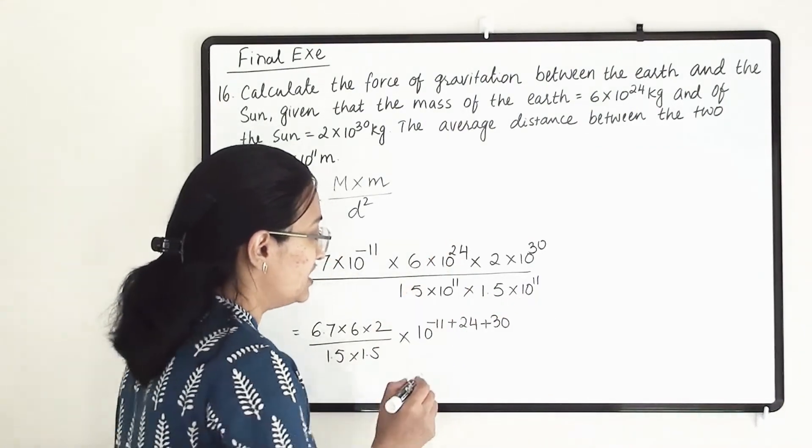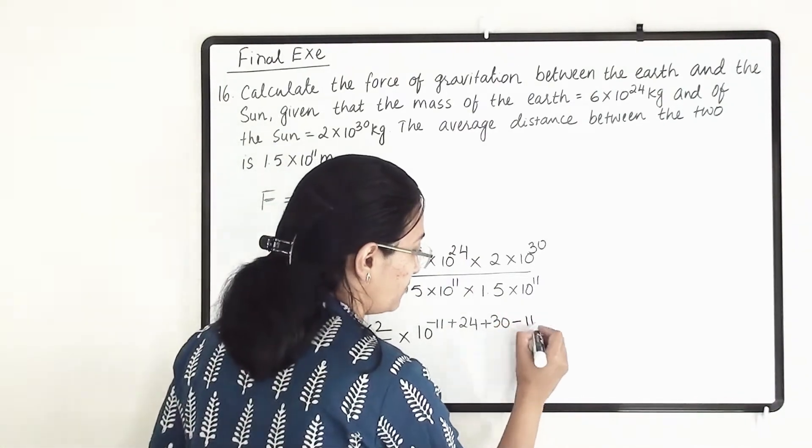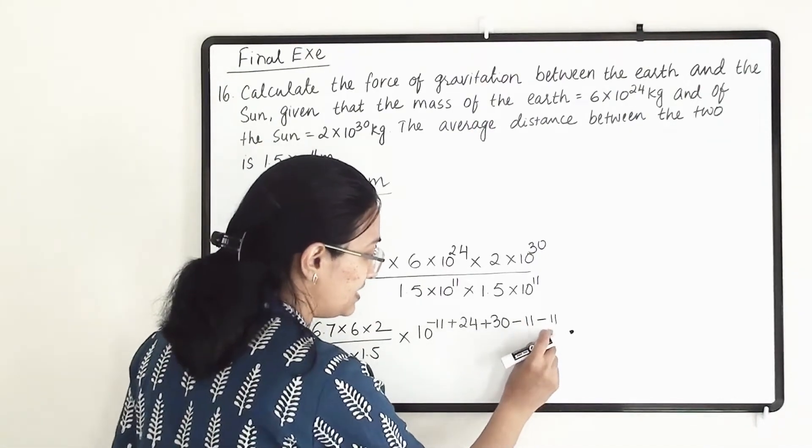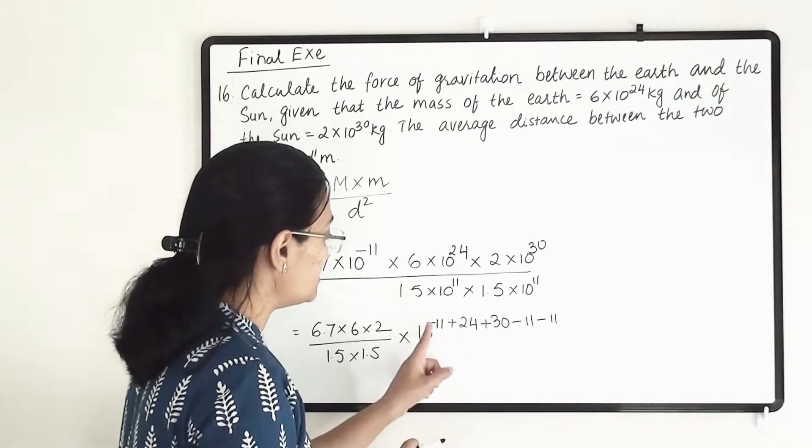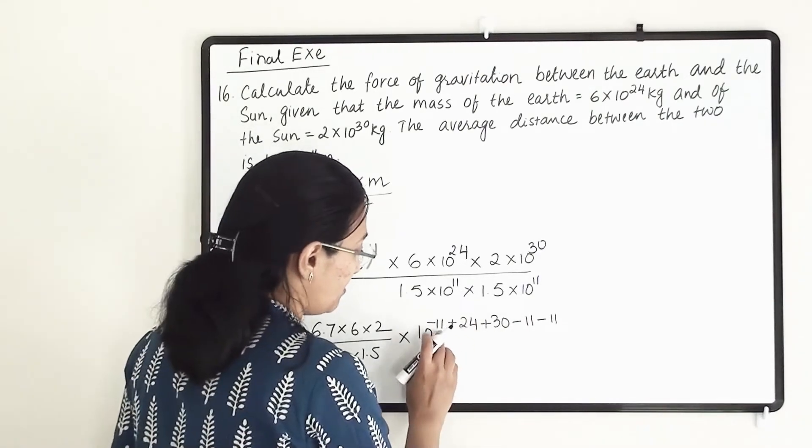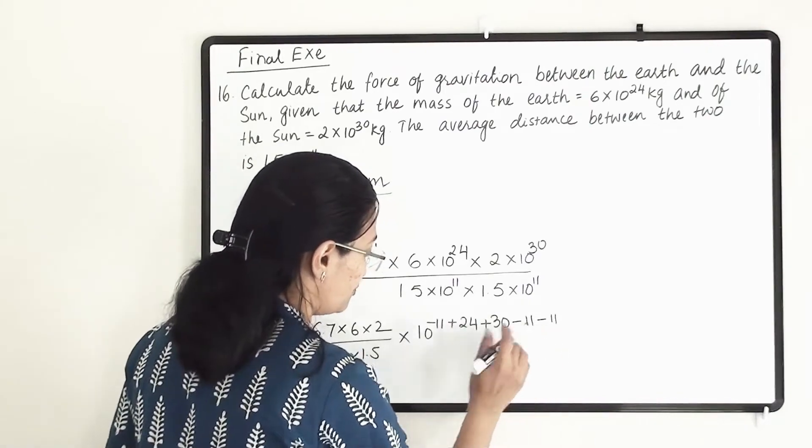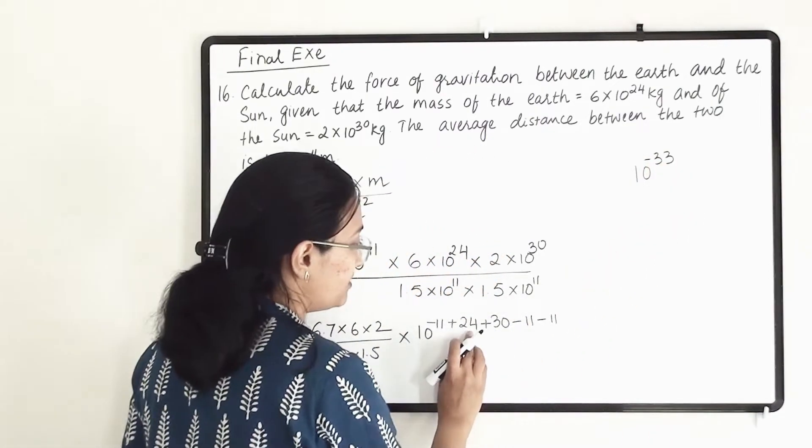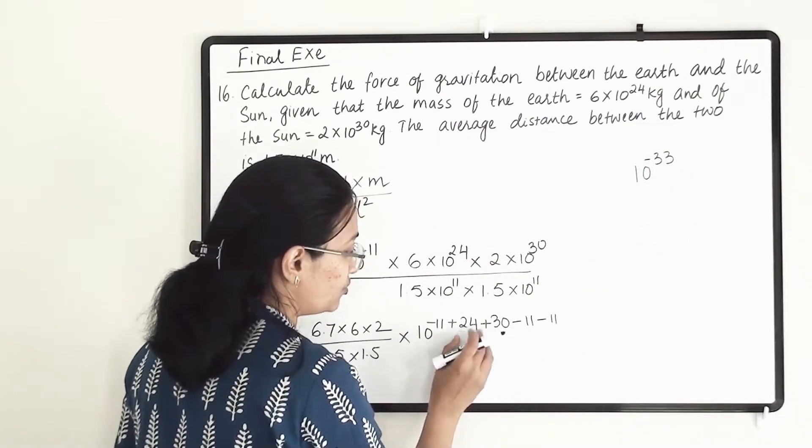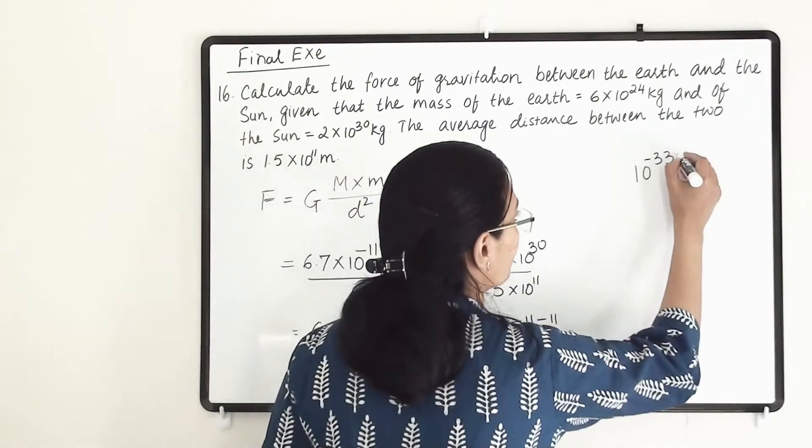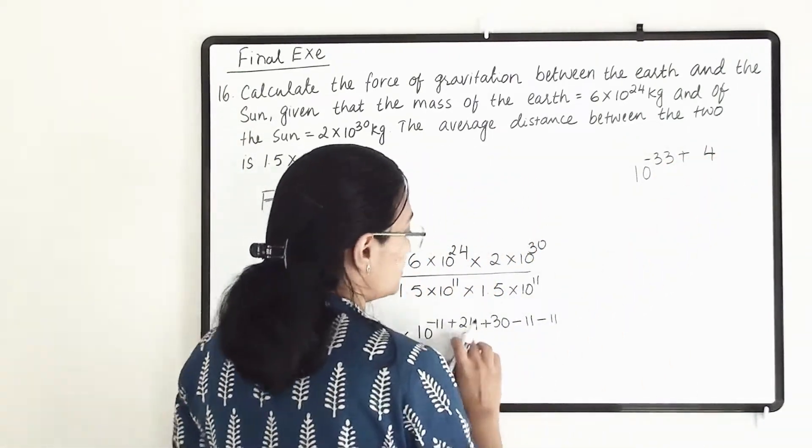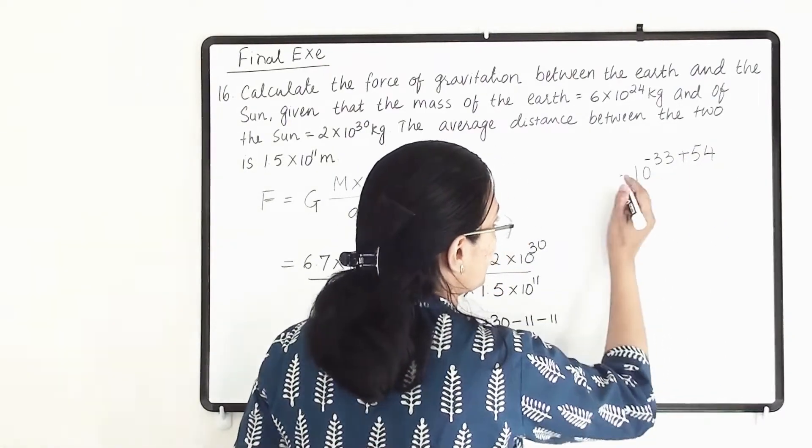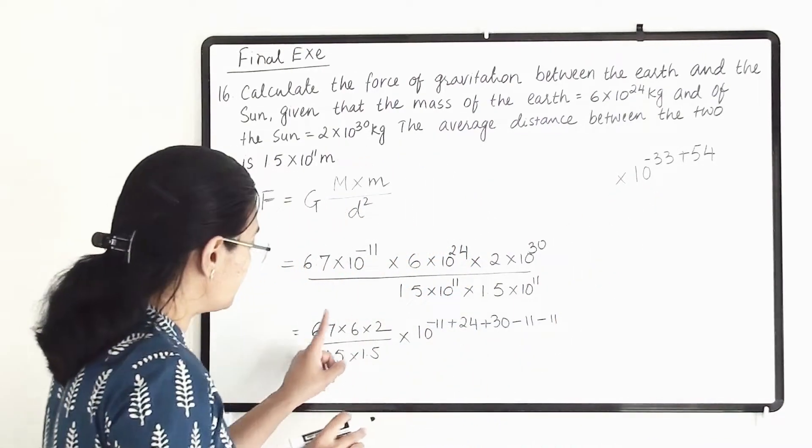If we are taking it into the numerator, it is going to be negative. So -11 and one more -11. Once we solve this, we will get 10 raised to -33, and when we are adding this to 24 and 30, we get 54. So -33+54, that will be the power of 10, which gives us 21.